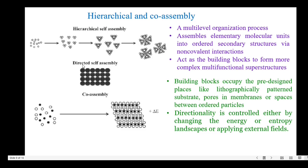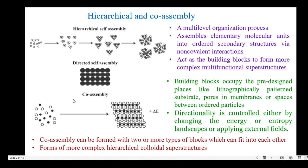The next one is directed self-assembly. In directed self-assembly, the building blocks occupy pre-designed places like lithographically patterned substrates, pores in membranes, or spaces between ordered particles. The directionality is controlled either by changing the energy or entropy landscapes or by applying external fields. The last one is co-assembly — co-assembly can be formed with two or more types of blocks which fit into each other, and here the colloidal particles form more complex hierarchical colloidal superstructures.